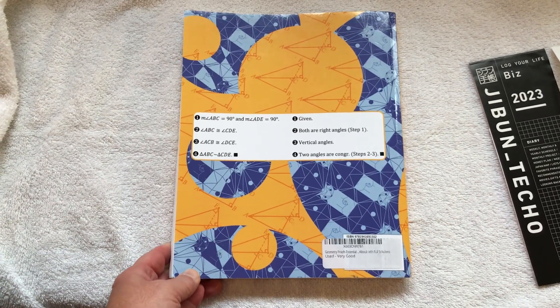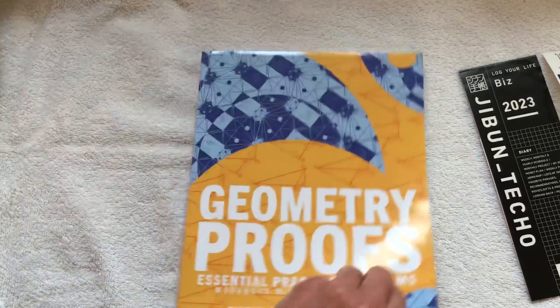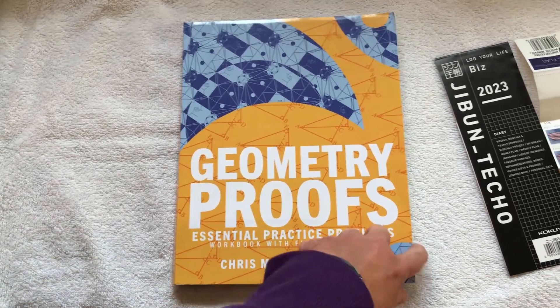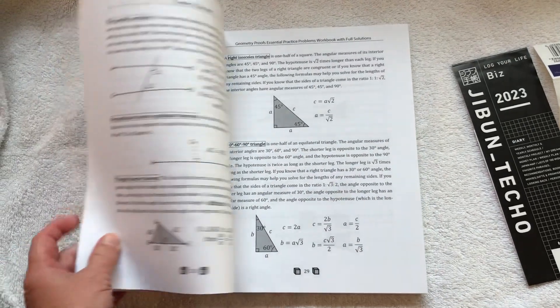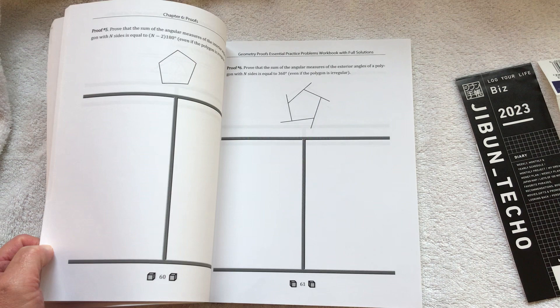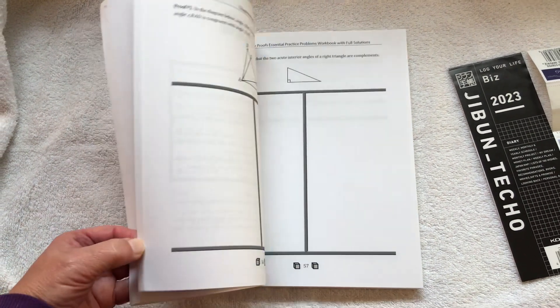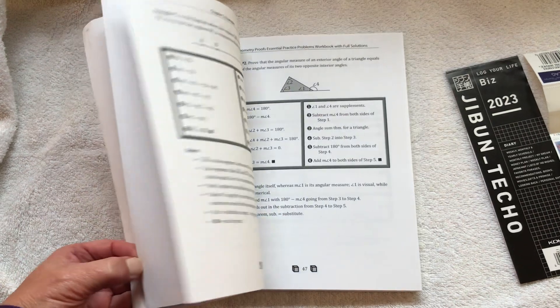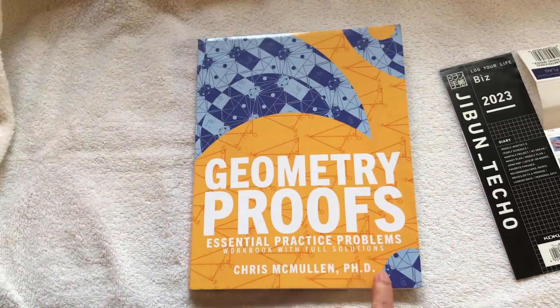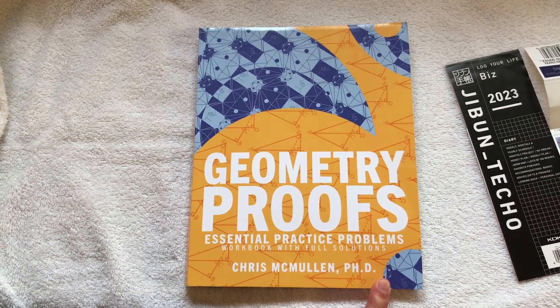There just weren't any other reviews on YouTube, couldn't get any good flip-throughs on Amazon, they didn't have a look inside feature. So I just went ahead and got it used, I think $7. So we'll see how this goes after I finish the other workbooks, but there you have it. Geometry Proofs by Chris McMullen.